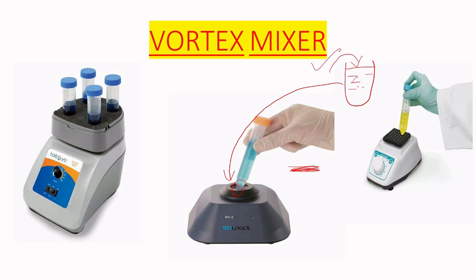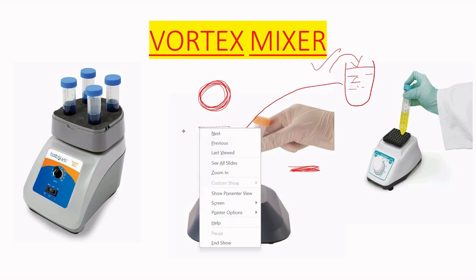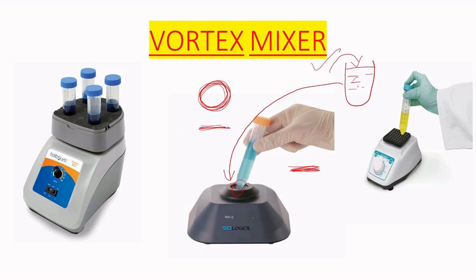The main difference between a centrifuge machine and a vortex mixer is that the centrifuge rotates in this way, while the vortex machine rotates or shakes in this way. So the vortex mixer is used for mixing of components, while the centrifuge machine is used for separation.